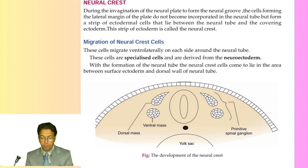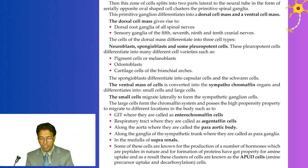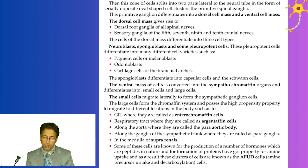The germ layers include the endoderm, ectoderm, and mesoderm — the mesoderm forming the intraembryonic and extraembryonic mesoderm. Specifically concerned with neural crest cells, we have the dorsal cell mass and the ventral cell mass, which give rise to two distinct elements from the neural crest. The neural crest is something like pluripotent — meaning many structures develop from the neural crest, which is why it is very important.